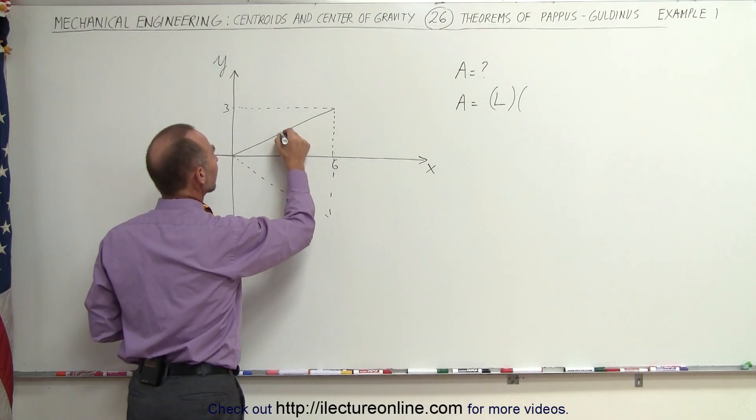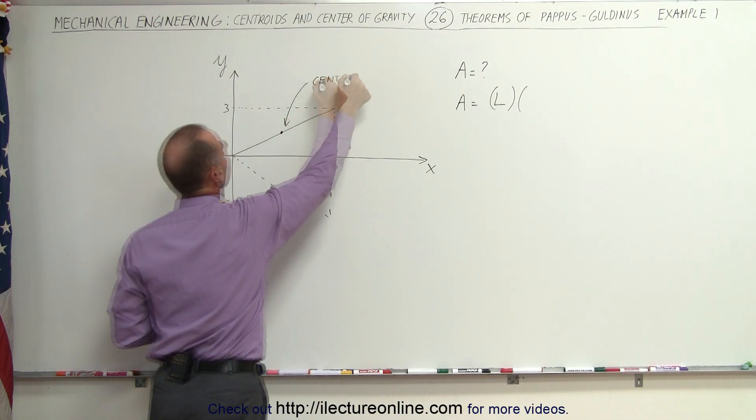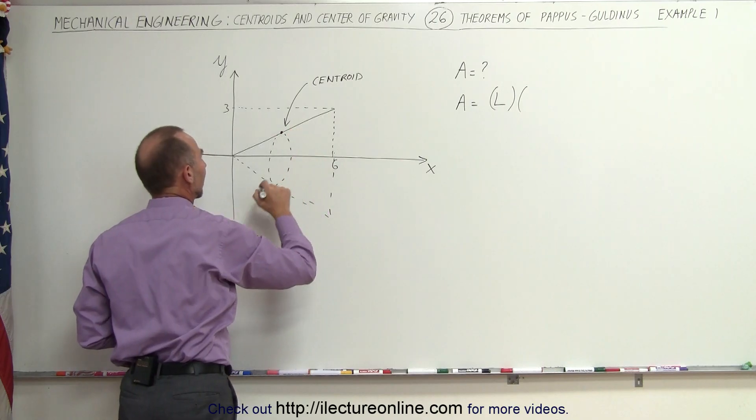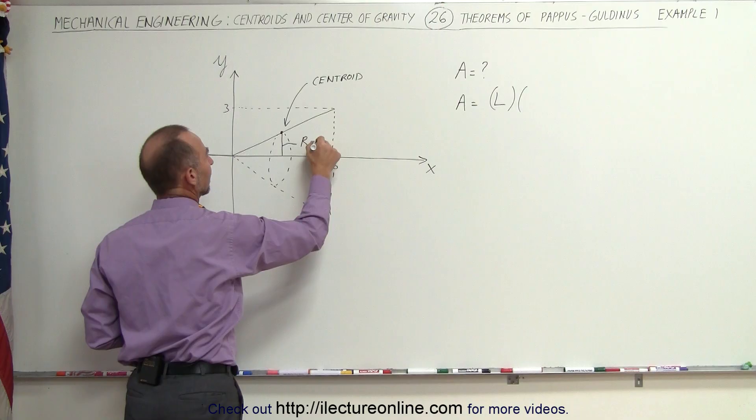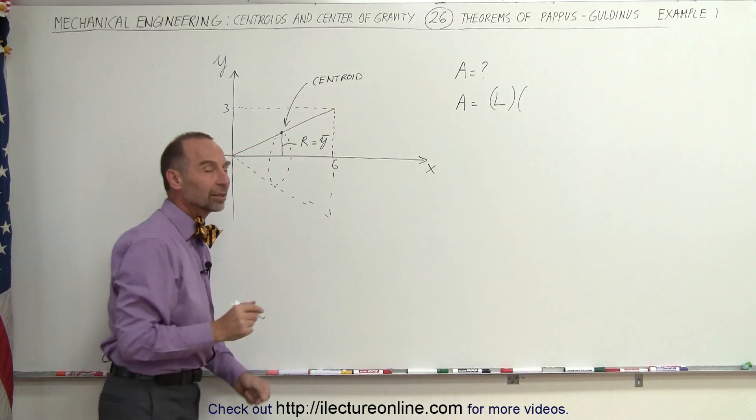Now the centroid will be right here at the halfway point. There is a centroid, and it will cover a circular path as it rotates about the x-axis. The radius of the circular path is going to be equal to the y-coordinate of the center mass of that particular line segment.